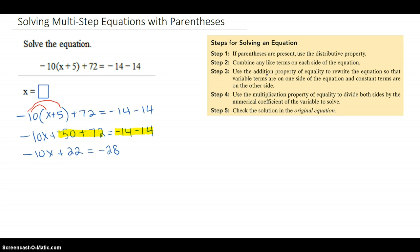Step 3: Use the addition property of equality to rewrite the equation so that the variable terms are on one side of the equation and the constant terms are on the other side. So what I want to do is get rid of this 22 because the variable is on this side. I want to get this 22 on that side.